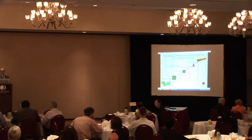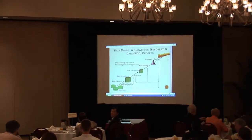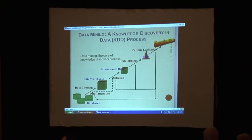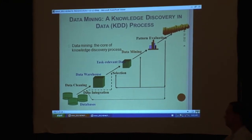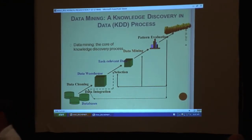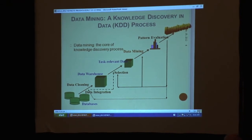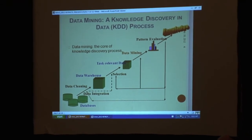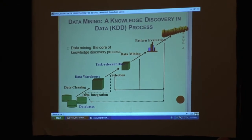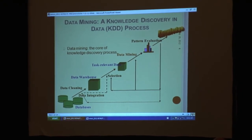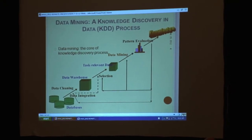Here we have a picture of data mining and knowledge discovery in patterns. We start on the bottom left with databases. Then we have to clean the data, make sure it's complete, and integrate the data into a data warehouse. From that we have task-relevant data. Data mining is the core of the knowledge discovery process, and from that we extract data and find patterns. At the upper top, we have knowledge discovery.